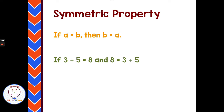The symmetric property — this one's so tough. If A equals B, then B equals A. Yes, if A equals B, then B equals A. So if 3 plus 5 equals 8, then 8 must equal 3 plus 5.